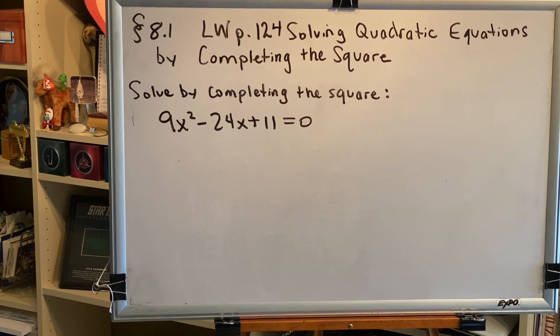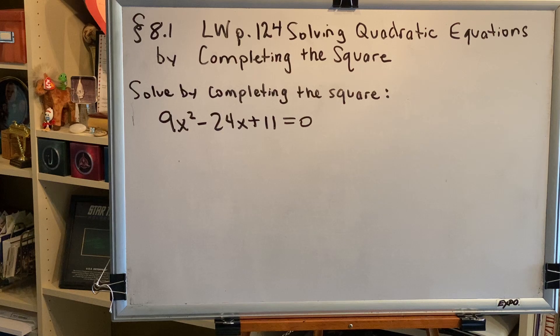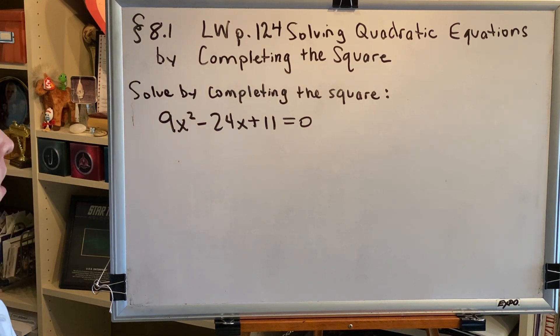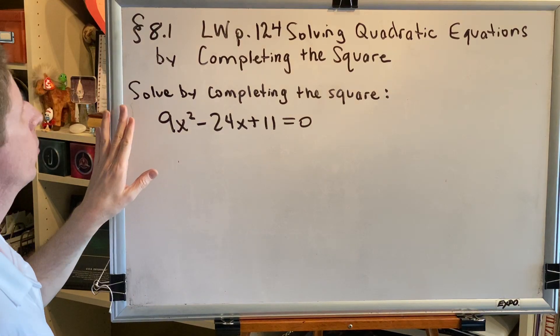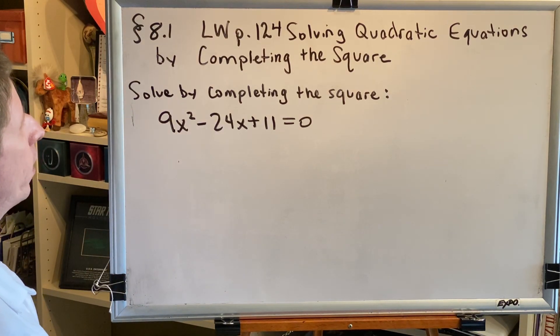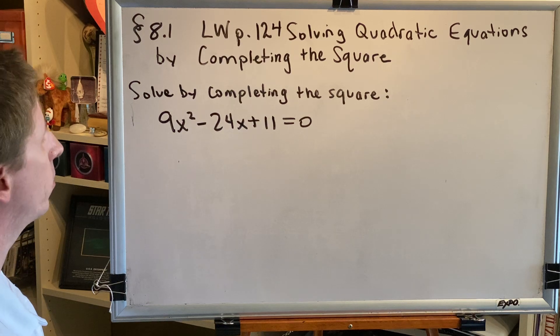Please open in your learning workbook to page 124. Let's solve a problem that uses the five steps of the process known as completing the square. Solve by completing the square: 9x squared minus 24x plus 11 equals 0.